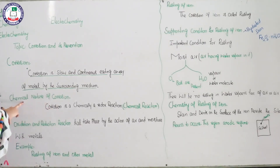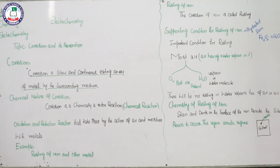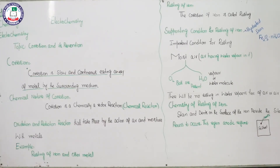If we look at the nature of the chemical reaction of corrosion, we simply say it is a redox reaction. When we talk about redox reaction, it involves both oxidation and reduction. Oxidation involves the addition of oxygen, removal of hydrogen, and loss of electrons. Reduction involves the addition of hydrogen, removal of oxygen, and the gaining of electrons.